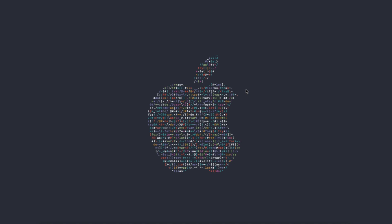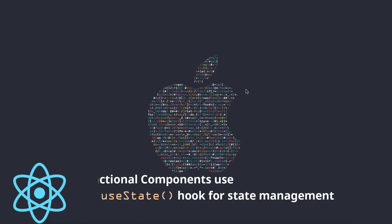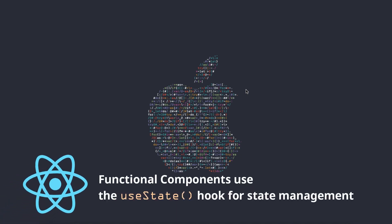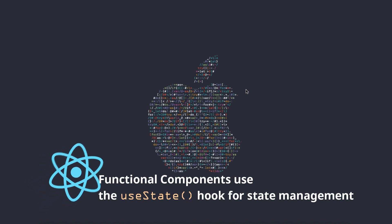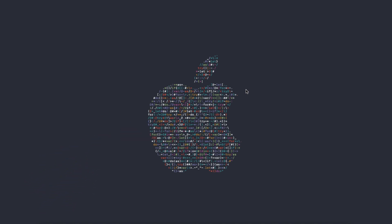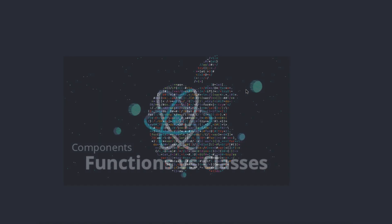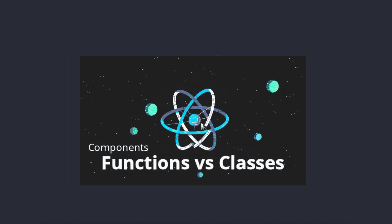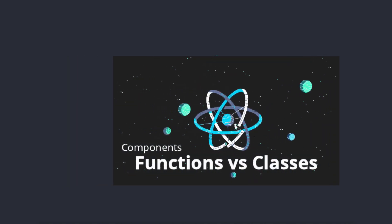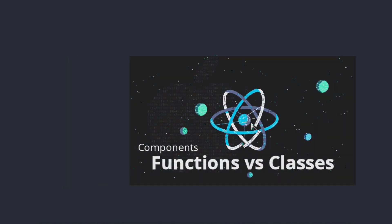Today we'll be learning about how state management works with the useState hook. There's an old way of managing component state through the setState function provided by React. Hooks come with functional components, but a React class component would use something like setState for state management. I touched on this in a previous video about the difference between functional components and classes.